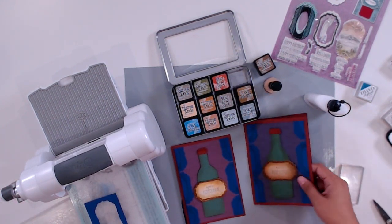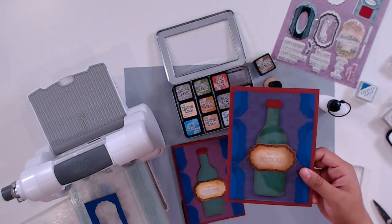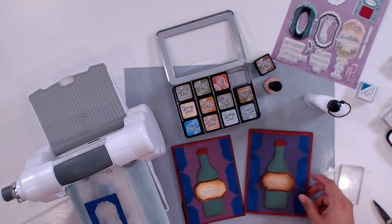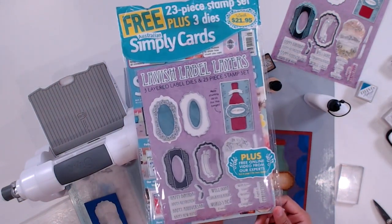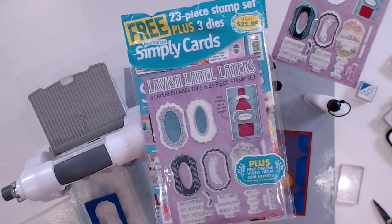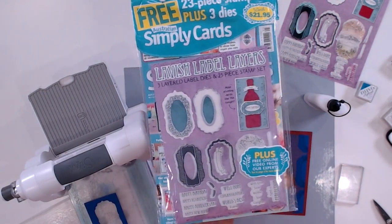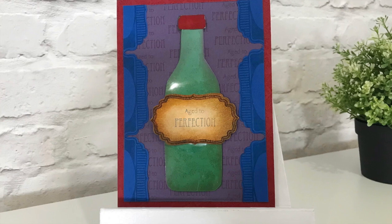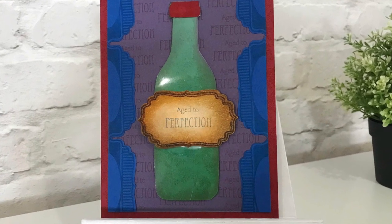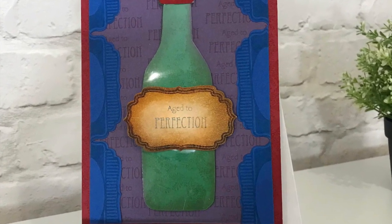And I'm done with my card. I hope that you enjoyed this tutorial and that you go out and grab your issue of Australian Simply Cards, issue 121, and get that Lavish Label Layers gift set. It's really great, versatile. You can do so much with it. I'm Jeanette Lane for Australian Simply Cards. Thank you so much for watching and I'll see you real soon. Bye!